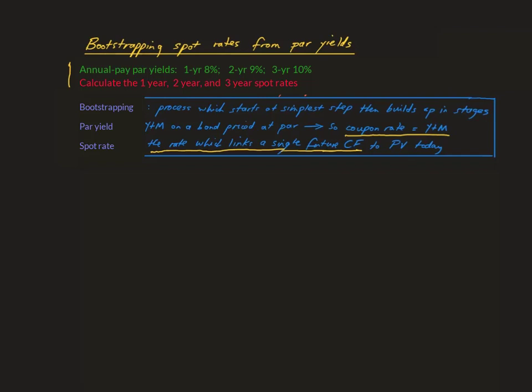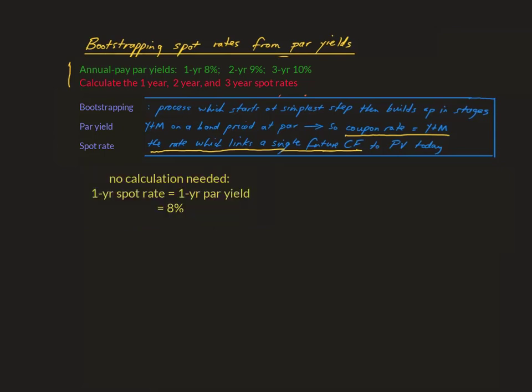You begin with the simplest step, which is the one-year par yield of eight percent. This means that a one-year bond with a face value of 100,000 Rand and a coupon rate of eight percent has a market value of 100,000 Rand. Because this is a one-year annual pay bond it has only one future cash flow at T1, being the repayment of the face value of 100,000 Rand plus the coupon for the year of 8,000 Rand. The only rate that explains a present value of 100,000 Rand and a future value of 108,000 Rand over one year is of course eight percent. In fact no calculation was required — the one-year spot rate has to be the same as the par yield, since there is just one future cash flow on the timeline.